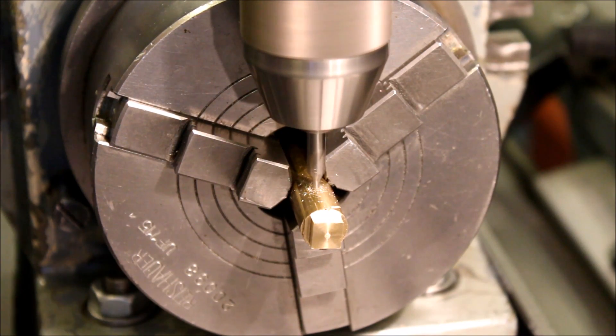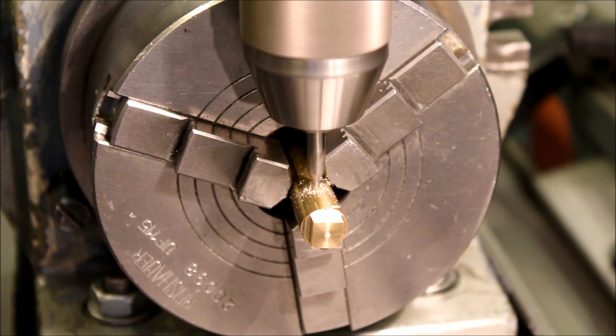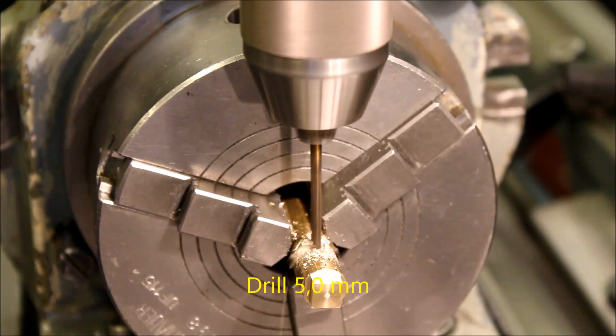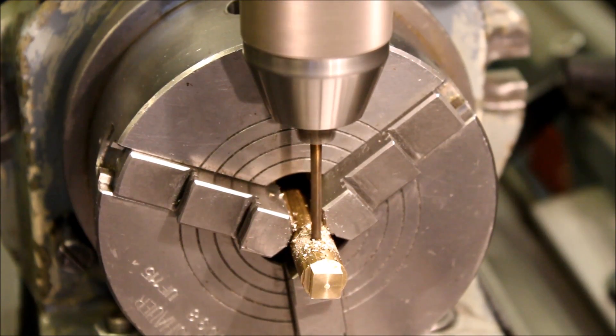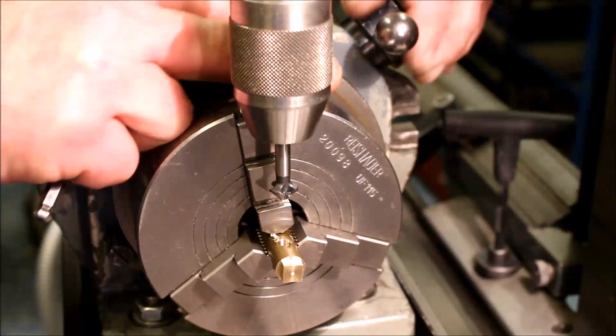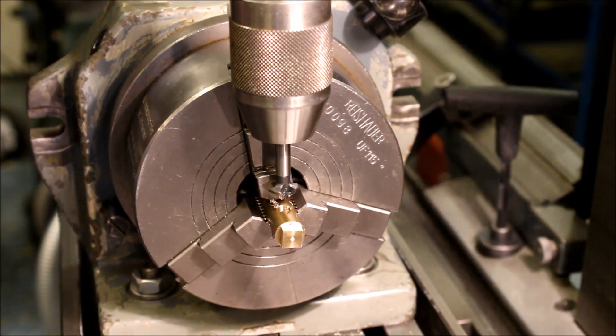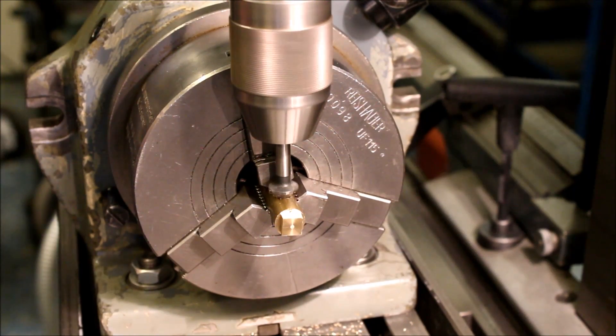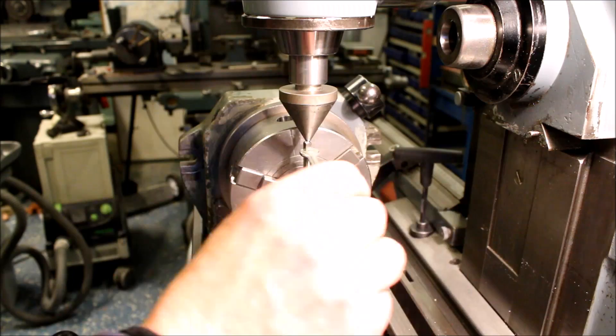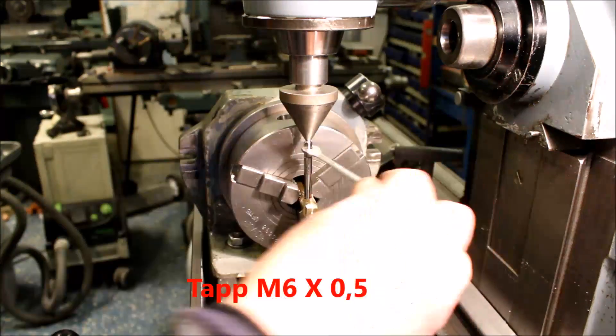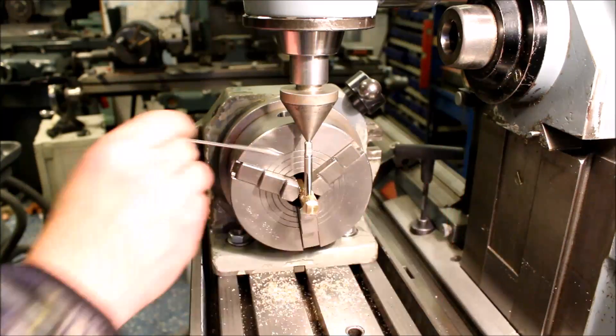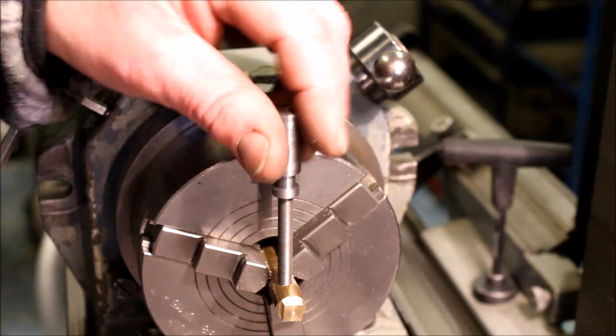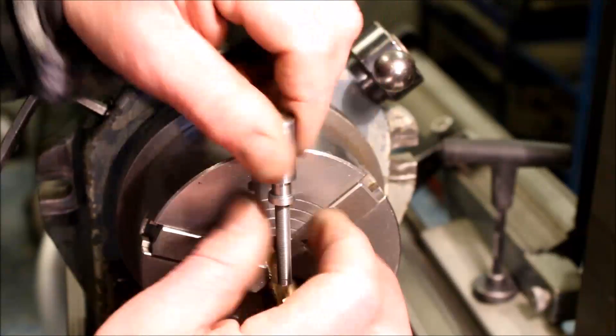I placed the brass bar in the indexing fixture, drilled the five millimeter hole and tapped it. Unfortunately, I don't have any quill feed on the S-Era, so I have to tap it by hand. And the feed screw seemed to fit quite all right.